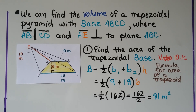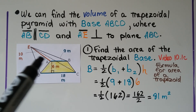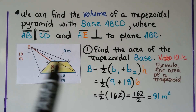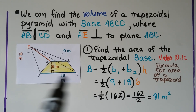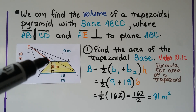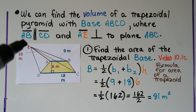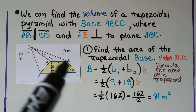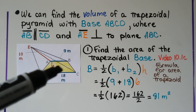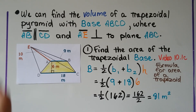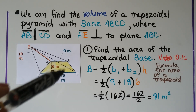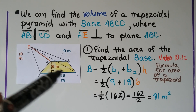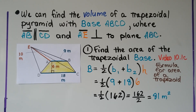We can find the volume of a trapezoidal pyramid with base ABCD, where segment AB is parallel to segment CD, and AE is perpendicular to plane ABC. So if this is sitting on the yellow base and we flip it so the trapezoid is in the air, AE would be perpendicular to the base. The first thing we do is find the area of the trapezoidal base.